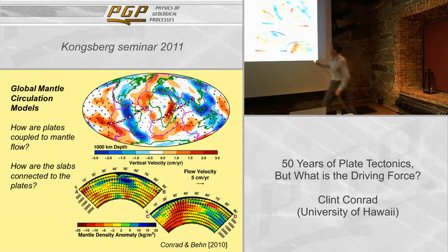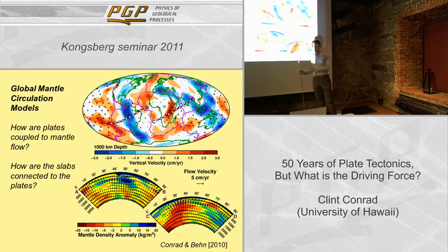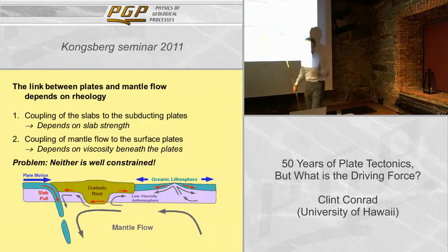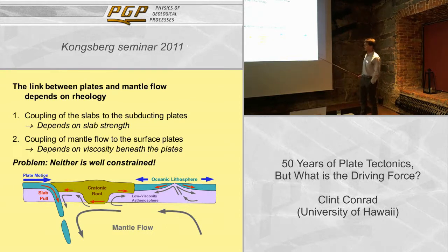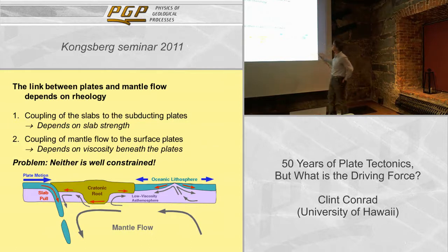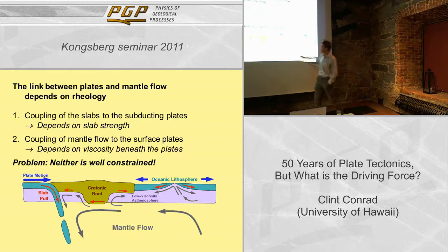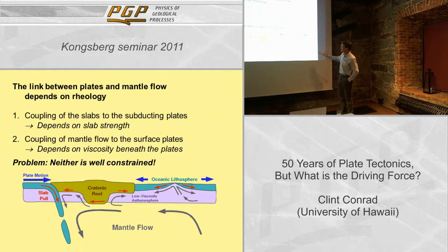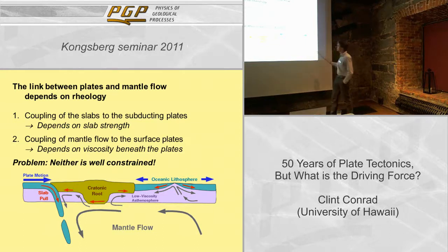In general, we need to ask: how are the plates coupled to this large-scale mantle flow? We think that the slabs are important — so how are the slabs connected to the plates? Those questions are fundamental to understanding how plate motions are coupled to the mantle flow in the interior. Both questions — how slabs couple to subducting plates, and how flow couples to surface plates — depend to a large extent on the rheology assumed. How strong are the slabs? Can they transmit the entire slab pull force? If there's a low-viscosity asthenosphere beneath the plates, how does that couple mantle flow to the plates?